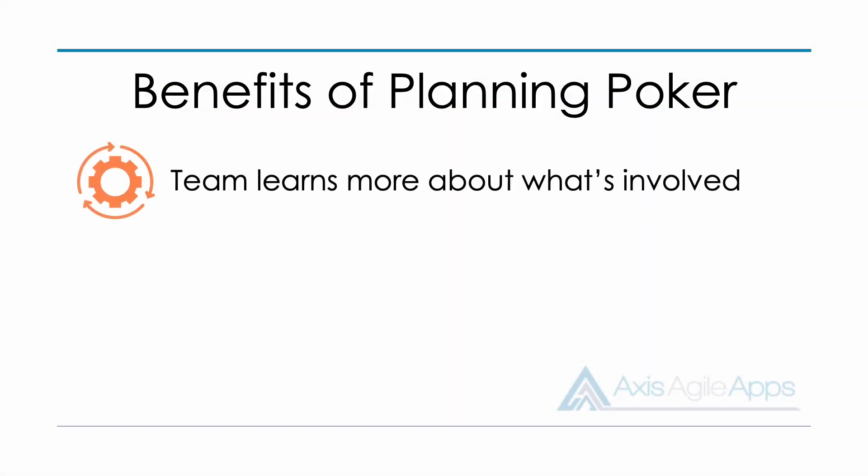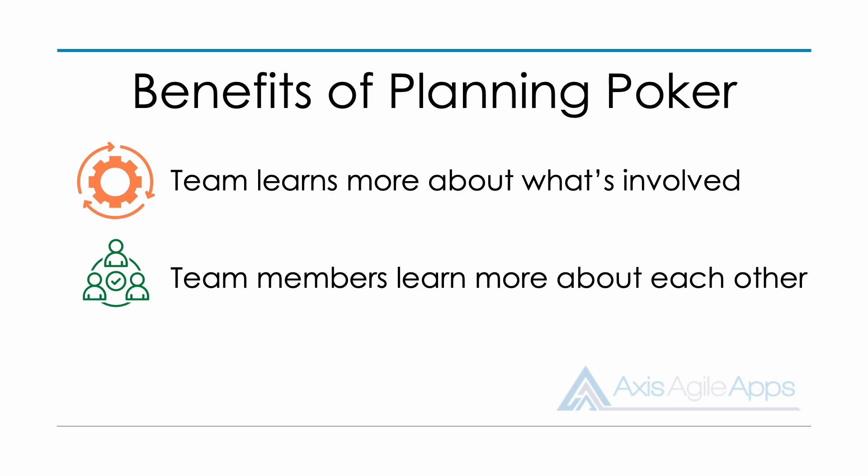Why do Agile teams use planning poker? There are some big advantages. The team is estimating collectively together, which leads to better estimates because everyone's points of view are considered. Not only does that help gain a better estimate, it also helps the team learn more about what's involved to get the work done — it's a cross-functional team with different skill sets. People on the team learn about the other skills required to deliver a product backlog item and learn about one another, which helps with team collaboration.